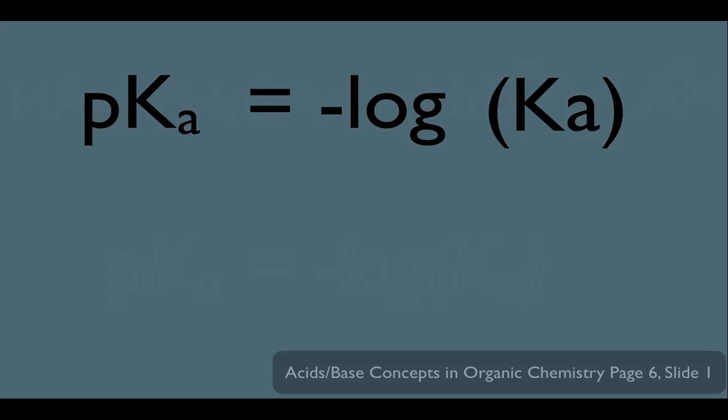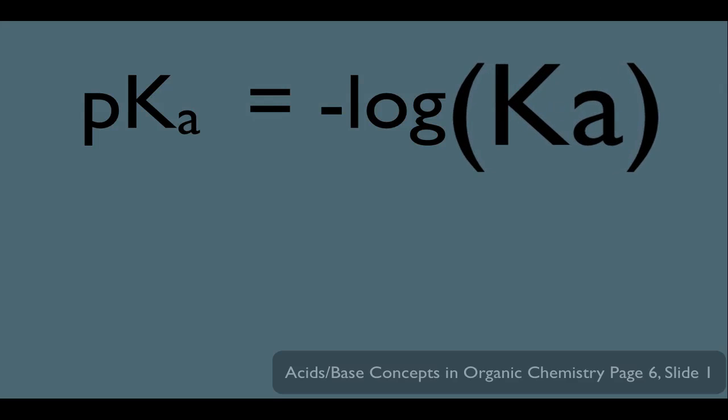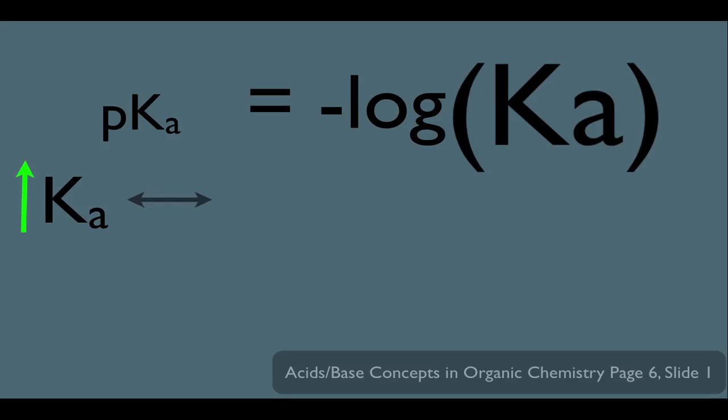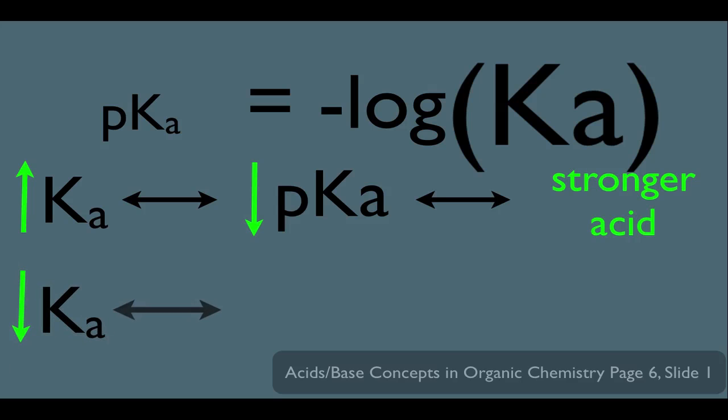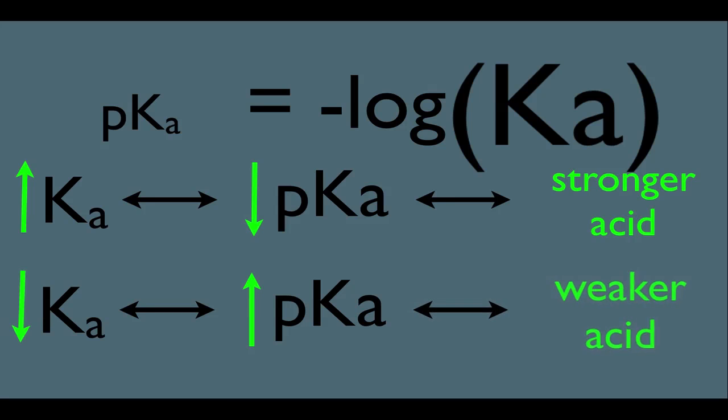But there's something very important that we should know about this equation right here. And that is, if you plug in a large Ka into this equation, it'll spit out a low pKa. So think about this. Let's pull this all together here for a second. That means if an acid has a higher Ka value, that means it's going to have a relatively lower pKa. And that in turn means it's going to be a relatively stronger acid. We should also know the reverse of this, which is basically the lower the Ka of an acid, the higher its pKa, and therefore the weaker the acid is. We're going to be using this a lot in organic chemistry, so please put this to memory.